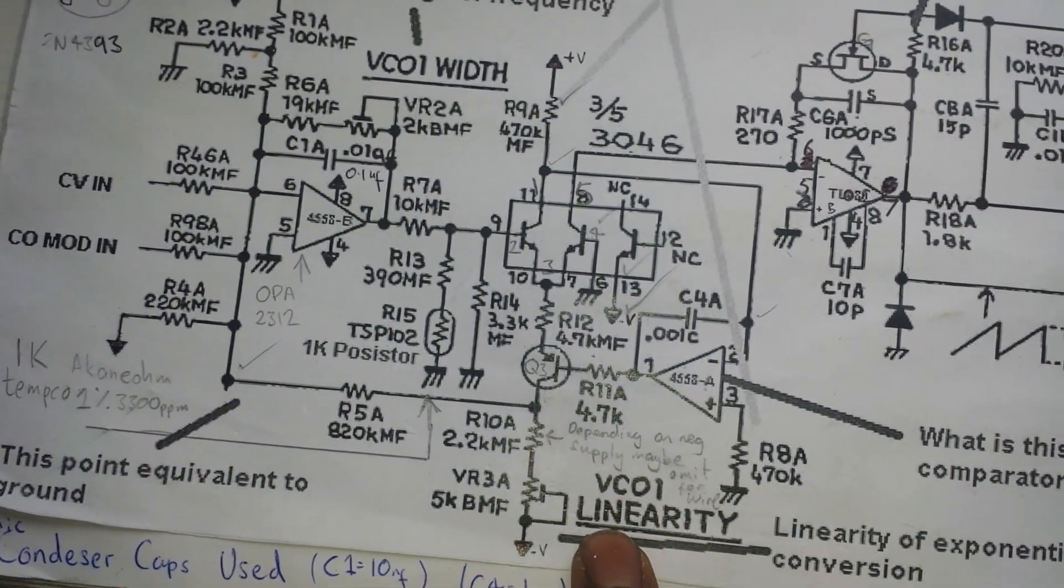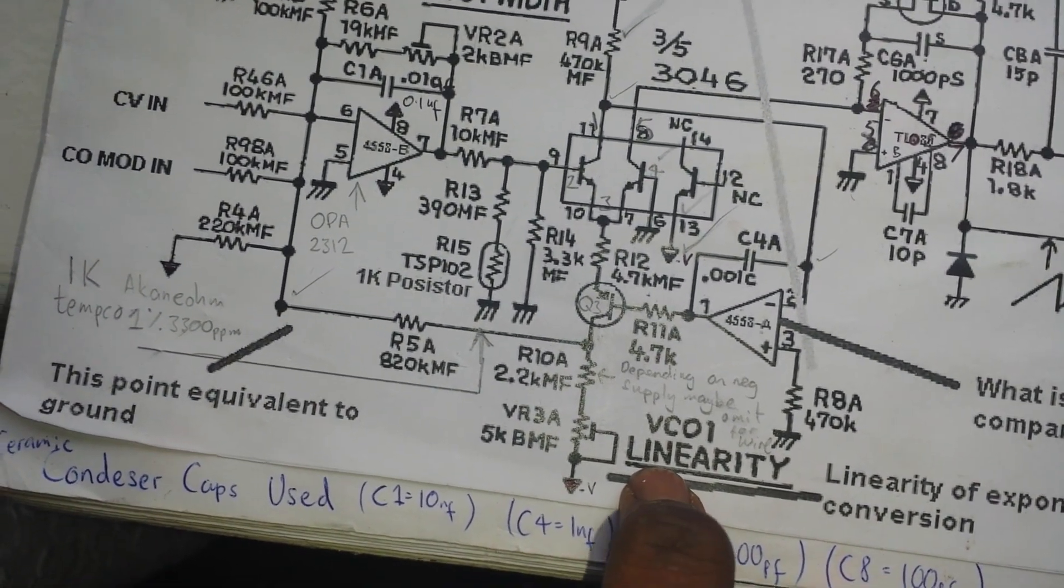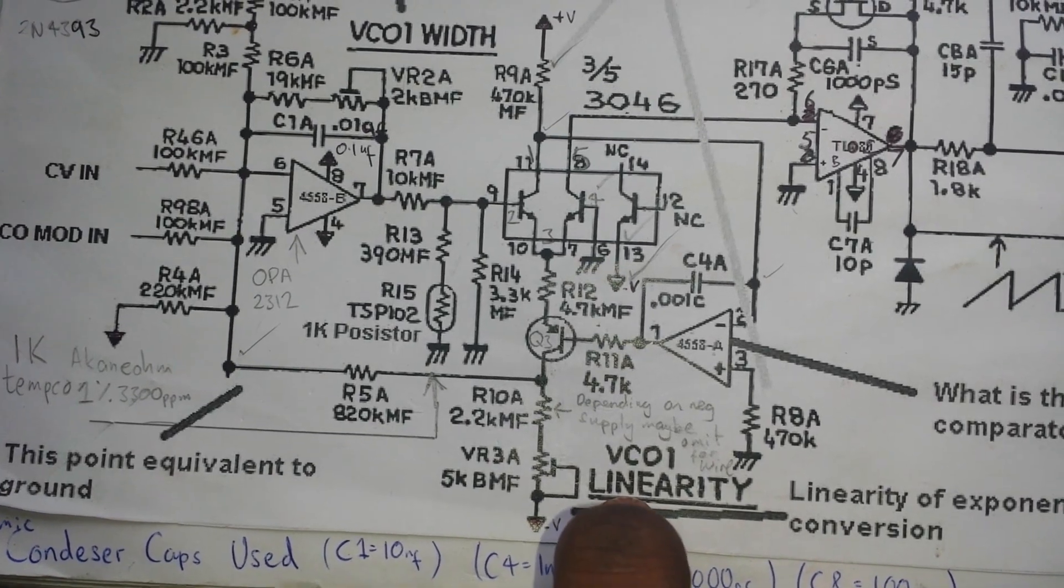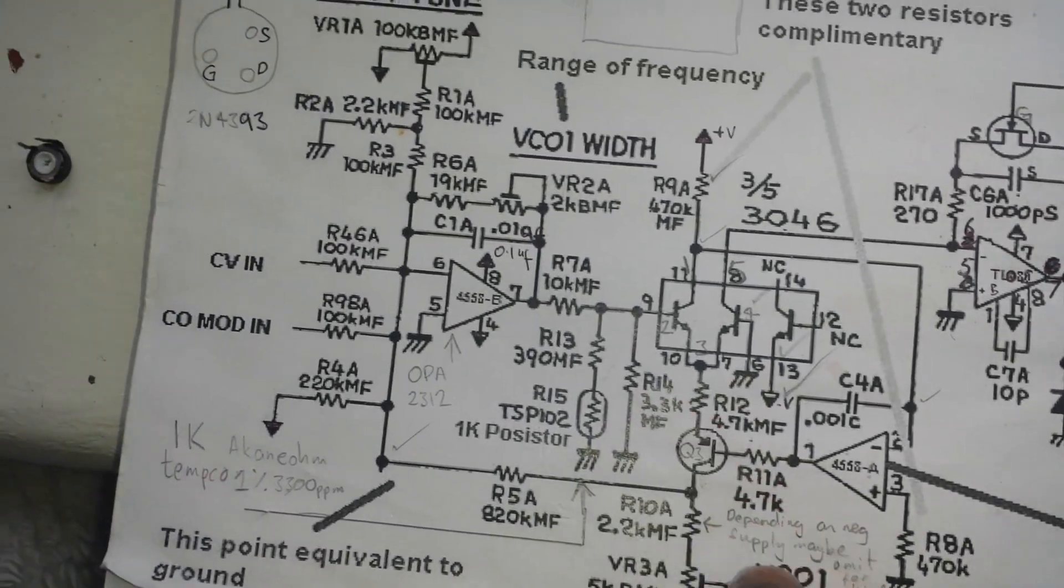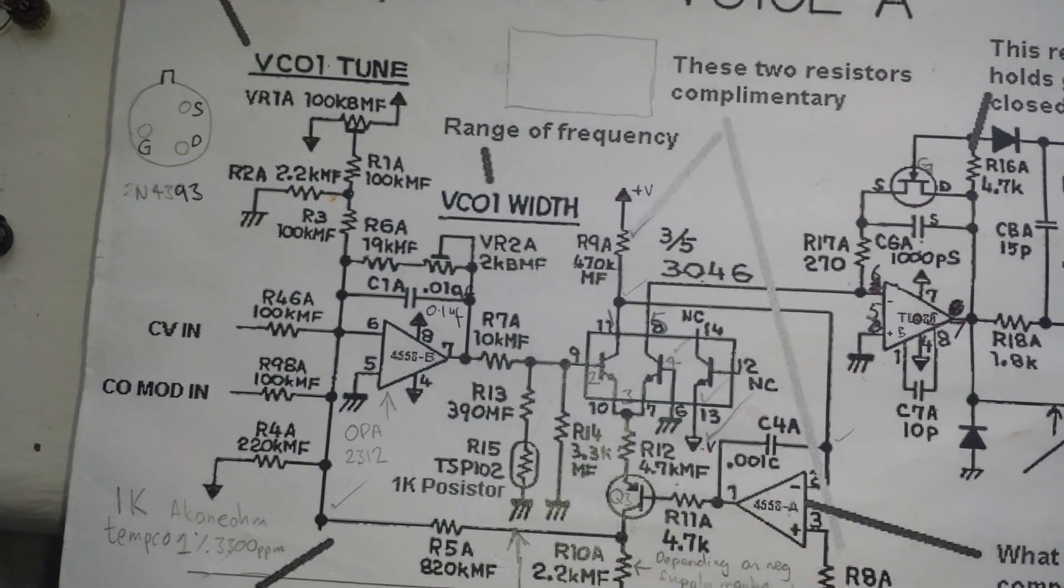And again, that is just a recap on that one. This will set how exponential or linear the keys, each note will be apart. So that's where you get your 1v per octave tuning.